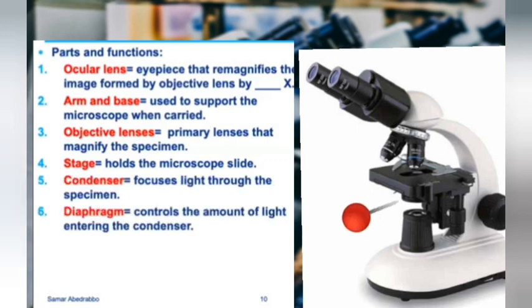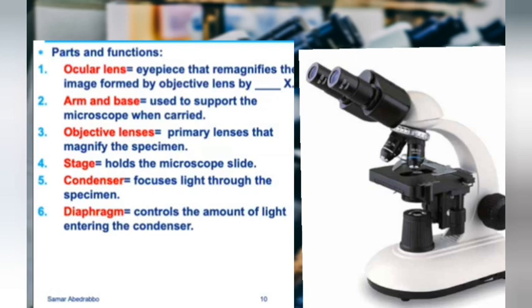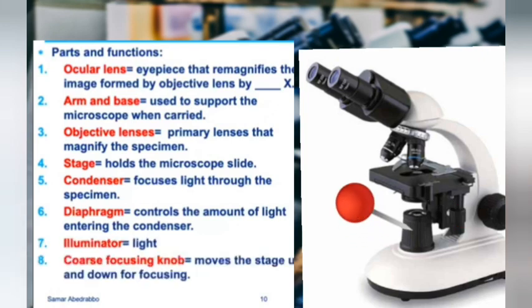The stage is where you put your microscope slide. Underneath the stage is the condenser — this is the part that focuses light on your specimen. The light shoots up into the condenser, and the condenser focuses it on the slide. On the condenser there is a diaphragm lever, a small piece you can move that controls the amount of light entering the condenser.